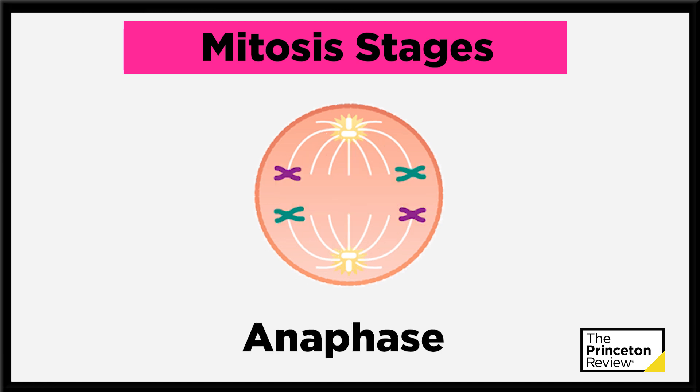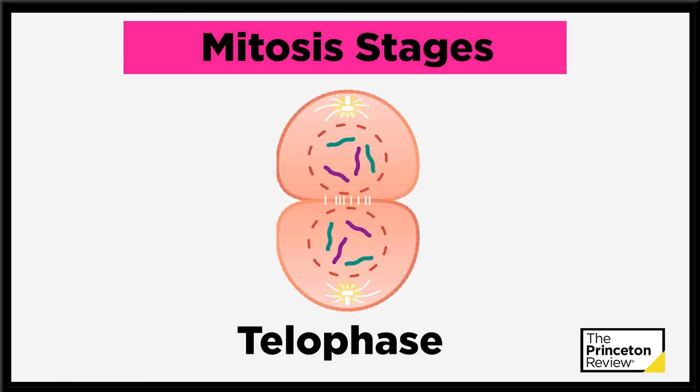In the anaphase, chromosomes are pulled away from the center, and finally in the telophase, mitosis terminates as the two new nuclei form. You should know both periods of the cell cycle — interphase and mitosis — in detail come test day.